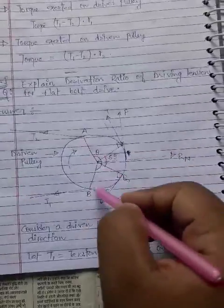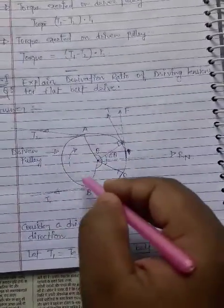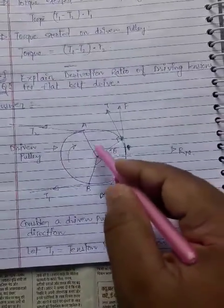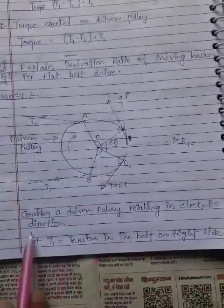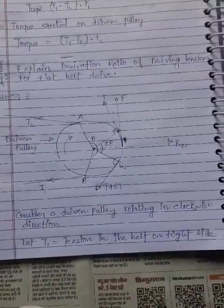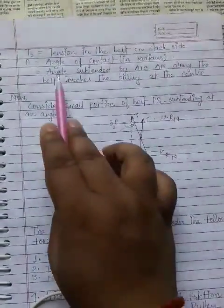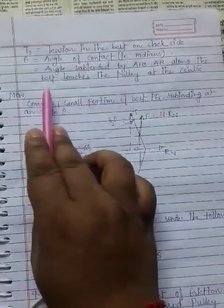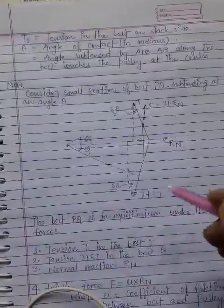Points A and B are where the belt ends — the points of contact of the belt on the pulley. The angle made by arc AB equals theta. Consider a driven pulley rotating in the clockwise direction. Let T1 equal tension in the belt on the tight side and T2 equal tension on the belt on the slack side. Theta equals angle of contact in radians, and this theta shows the angle subtended by arc AB along which the belt touches the pulley at the center.